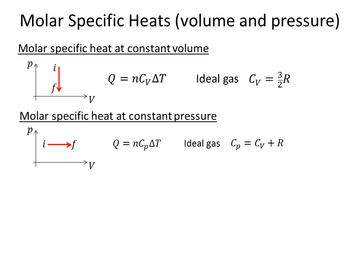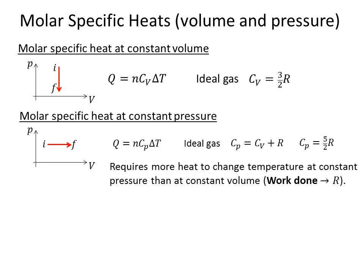For an ideal gas, C_p is equal to C_v plus R, or C_p is equal to five halves R for an ideal gas. The extra R comes from the fact that when you change the constant pressure, more heat is required to change the temperature since work is being done. The work being done leads to this extra R. At constant volume there is no work done obviously.